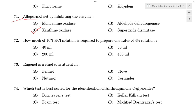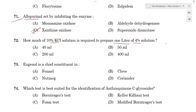Next question, number 72: How much of a 10% potassium chloride solution is required to prepare 1 liter of 4% solution? Option A: 40 ml. Option B: 50 ml. Option C: 200 ml. Option D: 400 ml.